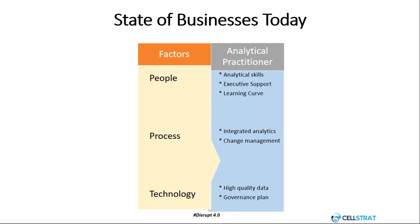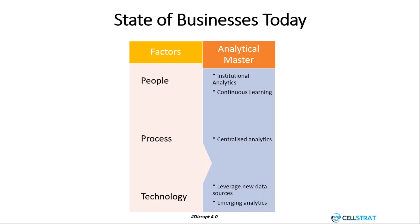The last and highest level is analytical masters. These organizations have institutional analytics — multiple country and office presence, with continuous learning happening across departments, companies, and continents. Centralized analytics processes have been deployed, and they leverage new data sources and emerging analytics globally. New tools with machine learning and deep learning capabilities are being deployed, where systems enabled by ML can provide customer service, manage logistics, analyze medical records, or even write news stories in near real time, giving productivity gains and improved quality of life.